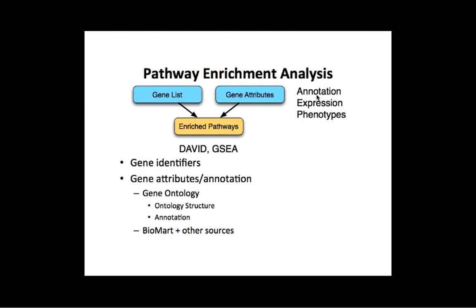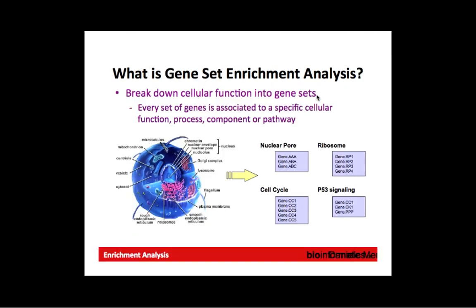We'll get started. I hope you guys had a good break. So I was reminding you about pathway enrichment analysis. We have a gene list, we have gene attributes like pathways, and we want to find which attributes or pathways are enriched in the gene list. There are a couple of tools available like DAVID and GSEA. We'll be talking mostly about DAVID, although I'll mention GSEA.